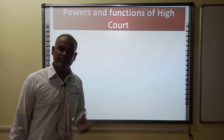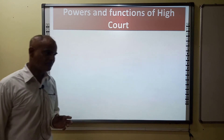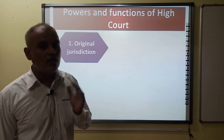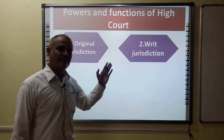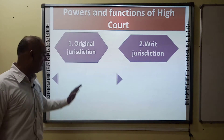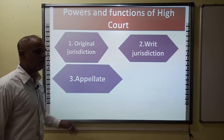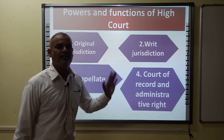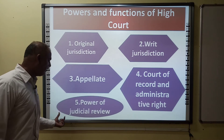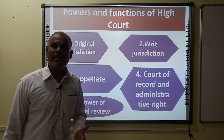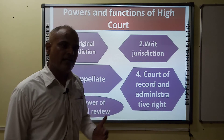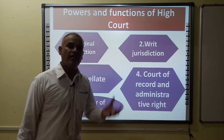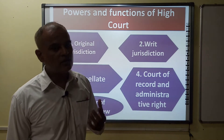Now, the powers and functions of the High Court. First is original jurisdiction, which includes court cases that are presented directly only in the High Court. Second is writ jurisdiction, which is the same as the Supreme Court. Third is appellate jurisdiction, which differs somewhat from the Supreme Court. Last is the power of judicial review. According to this power, the High Court can declare a law invalid or illegal if that law is found to be not in accordance with the Indian Constitution.